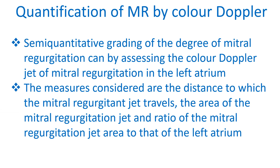Quantification of mitral regurgitation by Colored Doppler echocardiogram. Semi-quantitative grading of the degree of mitral regurgitation can be done by assessing the Colored Doppler jet of mitral regurgitation in the left atrium. The measures considered are the distance to which the mitral regurgitation jet travels, the area of the mitral regurgitation jet, and the ratio of the mitral regurgitation jet area to that of the left atrium.